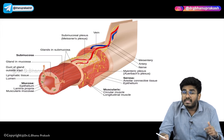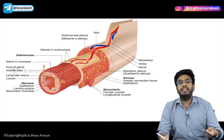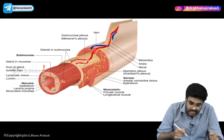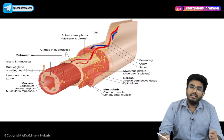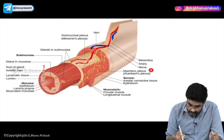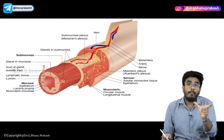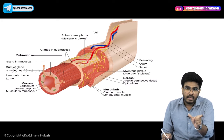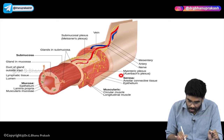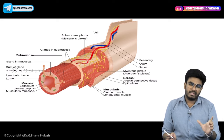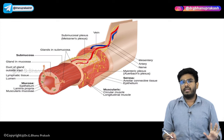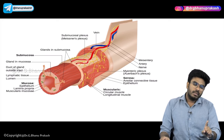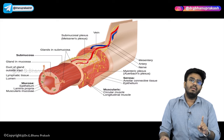Meissner's plexus helps in GI secretions by stimulating the glands in the submucosa. And there is a plexus going to the muscularis layer called the myenteric plexus or Auerbach's plexus. Myo means muscles, so the plexus innervating the muscles is the myenteric plexus. Myenteric plexus or Auerbach's plexus innervates the muscularis layer, helping in GI motility.